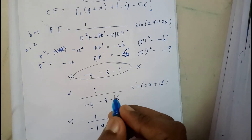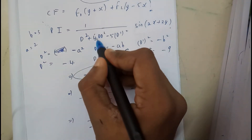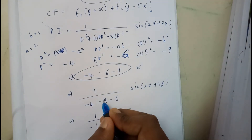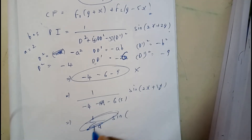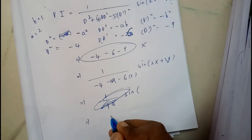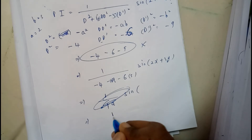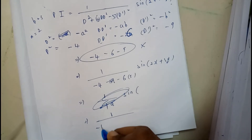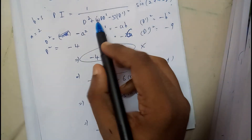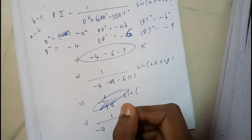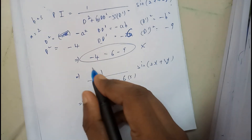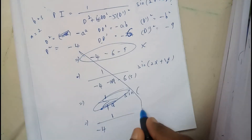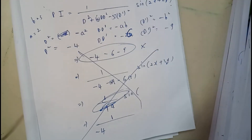Just a correction — I had forgotten to include the coefficients 4 and 5. So with the corrected values, we recompute: D² = −4, DD' = −6, D'² = −9, and the coefficients 4 and 5 must be applied properly.